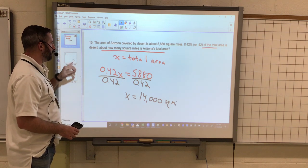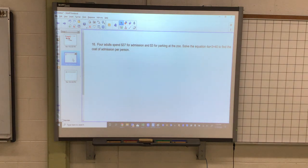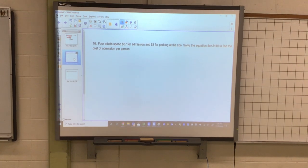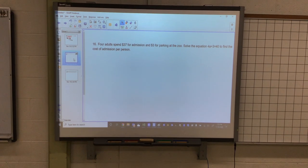Number two: four adults spend $37 for admission and $3 for parking at the zoo. Solve the equation 4A plus 3 equals 40 to find the cost of admission per price.